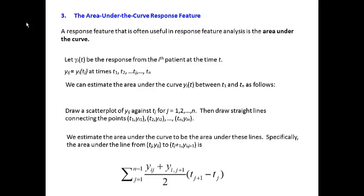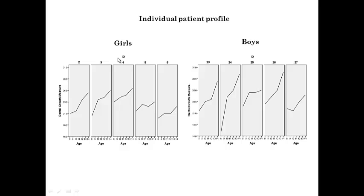In the last video in chapter 28, I'm going to show you how to create an area under the curve summary measurement. This is a growth curve profile for each individual subject in this study. I am showing you data on the first five girls and first five boys. Let's look at area under the curve under this growth curve.